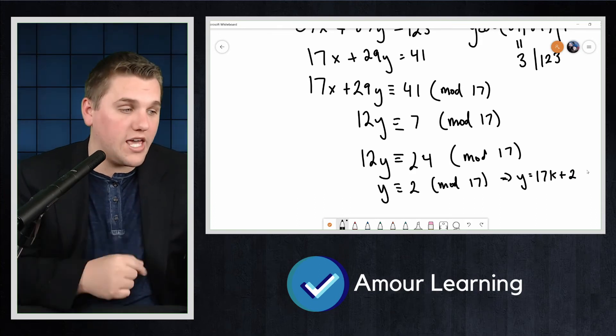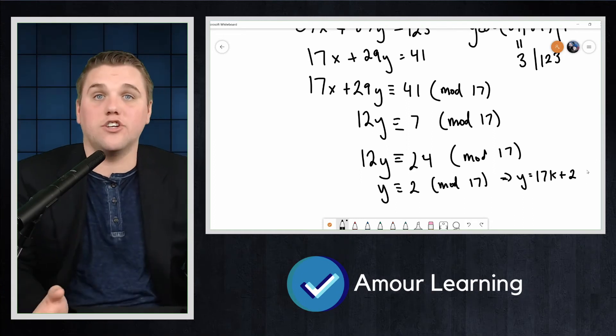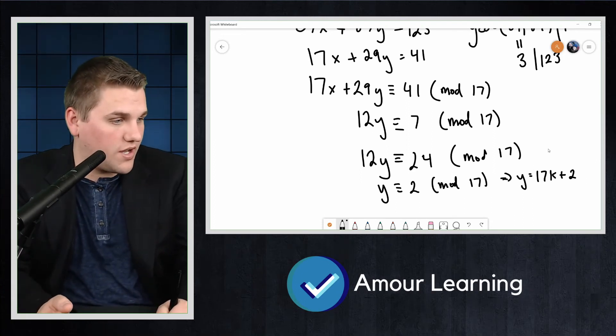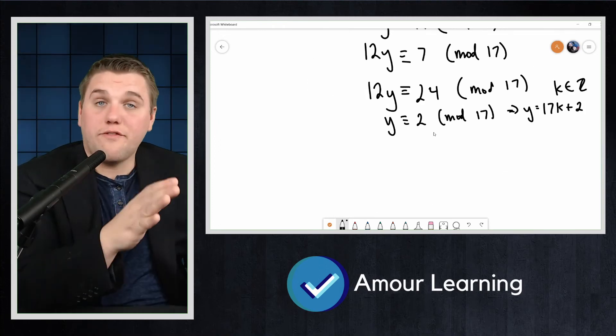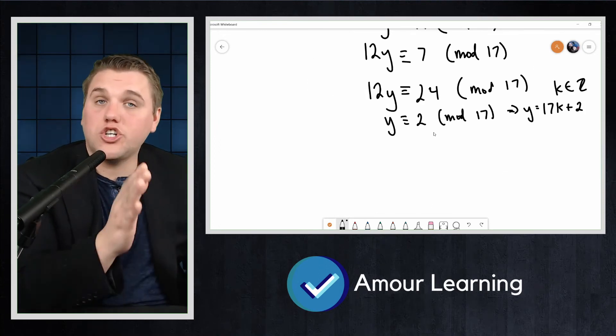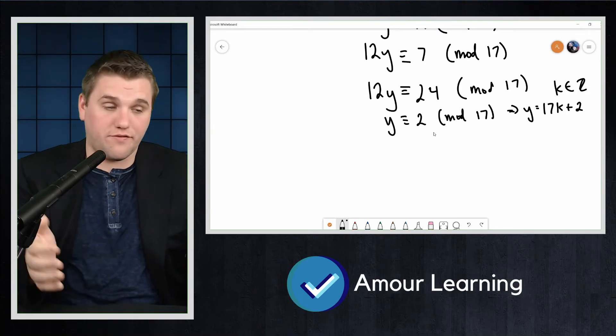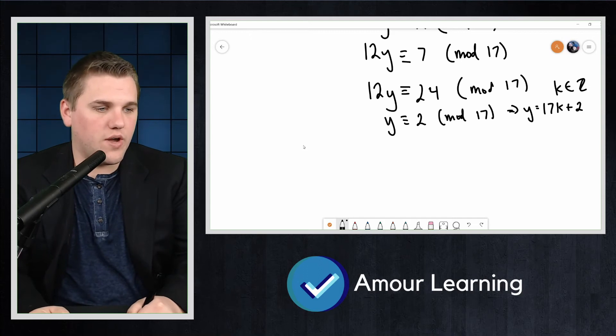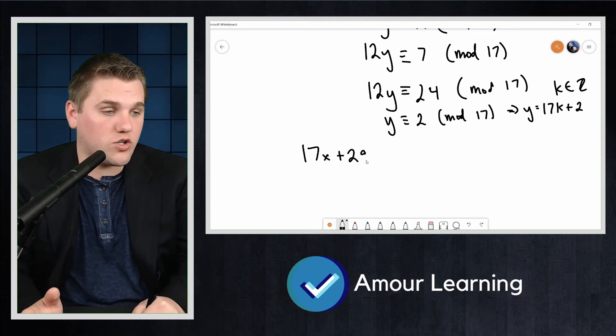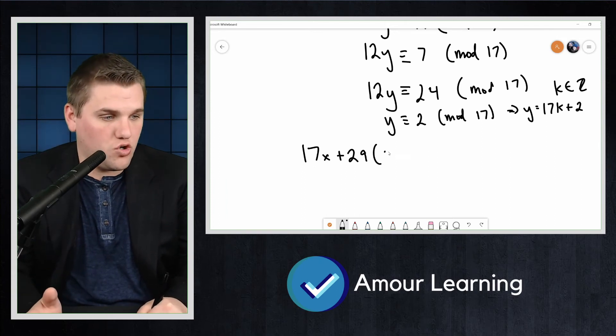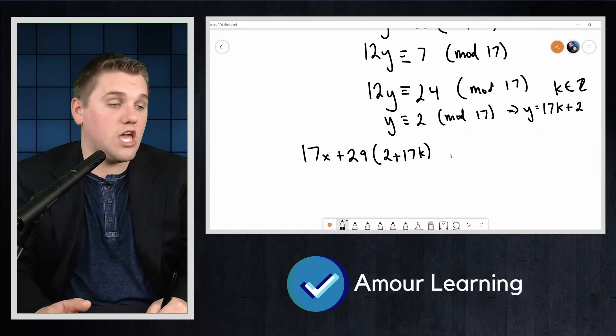So now at this point we know that y = 17k + 2 and this will work for any integer k. If we haven't made a mistake we should be able to plug this back into our original Diophantine equation to find x. And so 17x + 29(17k + 2) = 41.